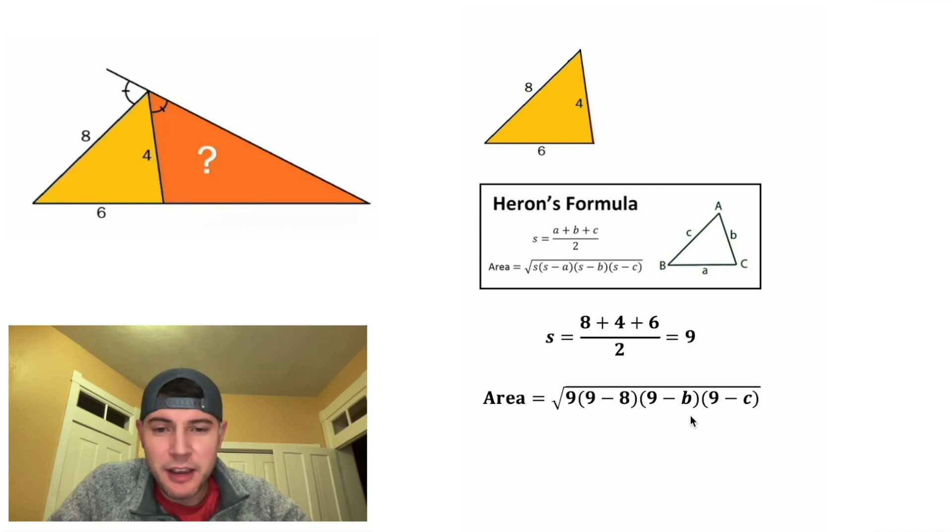And then we'll plug in 8 for the A, 4 for the B, and 6 for the C. And we can simplify this. We can bring down the 9 and all the parentheses. 9 minus 8 is equal to 1. 9 minus 4 is equal to 5. 9 minus 6 is equal to 3.